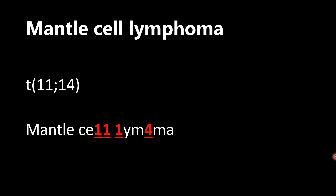Mantle cell lymphoma is the translocation between chromosomes 11 and 14. The way I incorporate this into the name: the two L's in 'cell' are going to be chromosome 11. And then just like we saw with Burkitt lymphoma, the 1 and the 4 represent 'lymphoma'. So mantle cell lymphoma is a translocation between chromosomes 11 and 14.